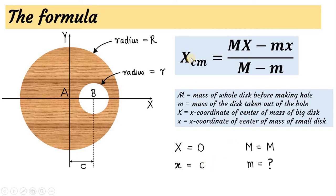Capital M in the formula is the mass of the whole disc, which is M. Small m is the mass of the disc taken out from the hole — that is unknown to us and we have to calculate it. Let us go to the next page to calculate the mass of the disc that was removed.